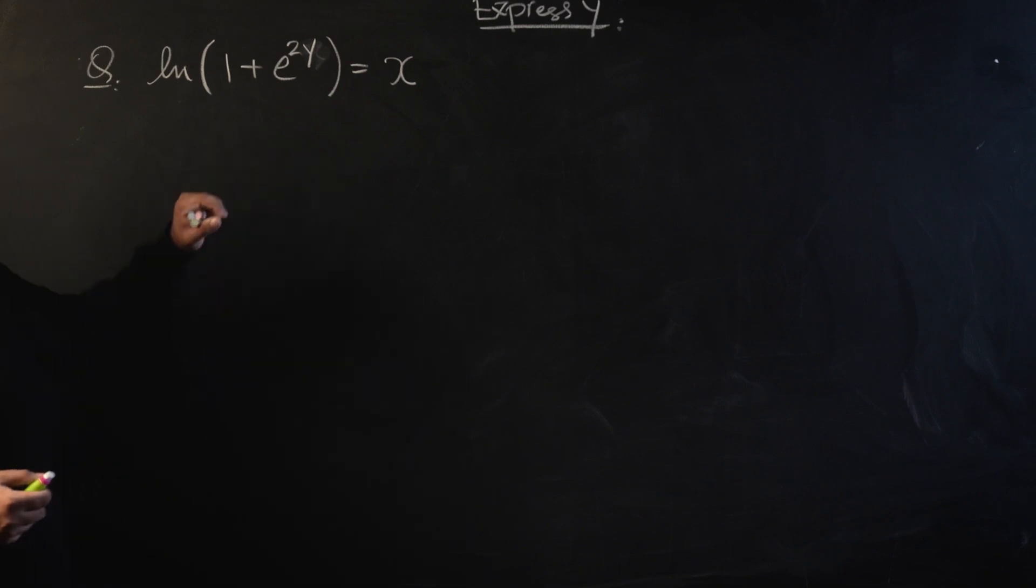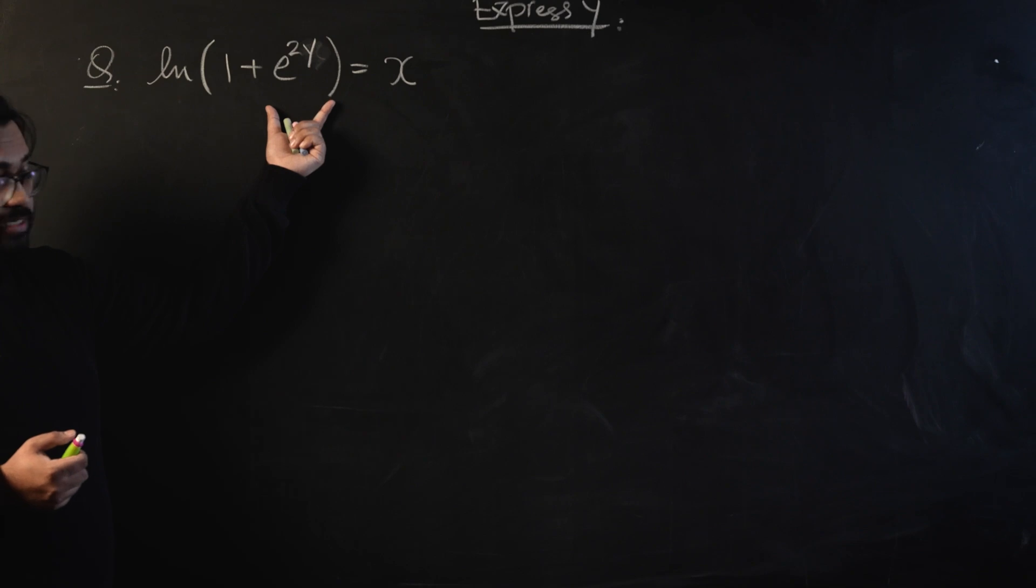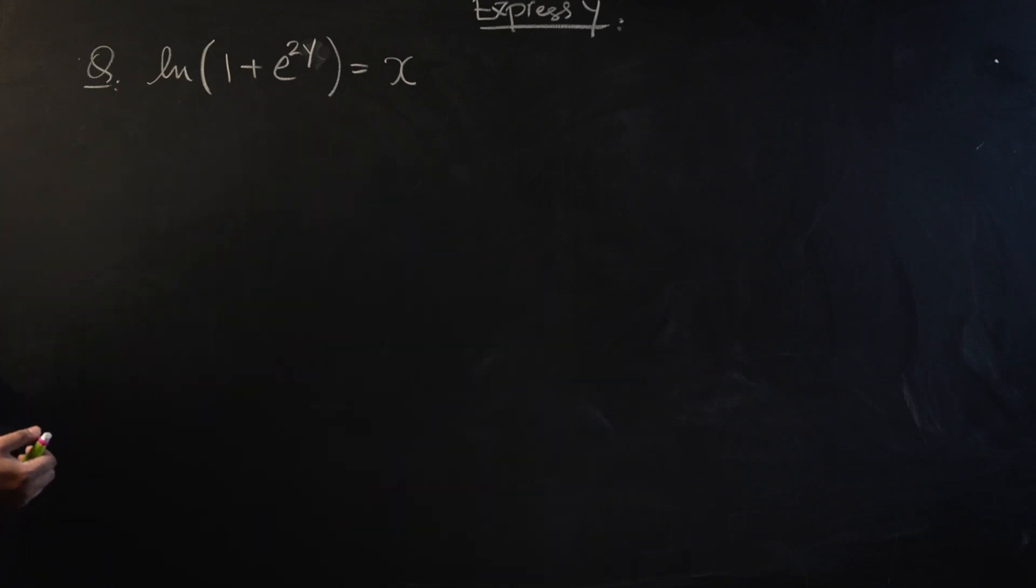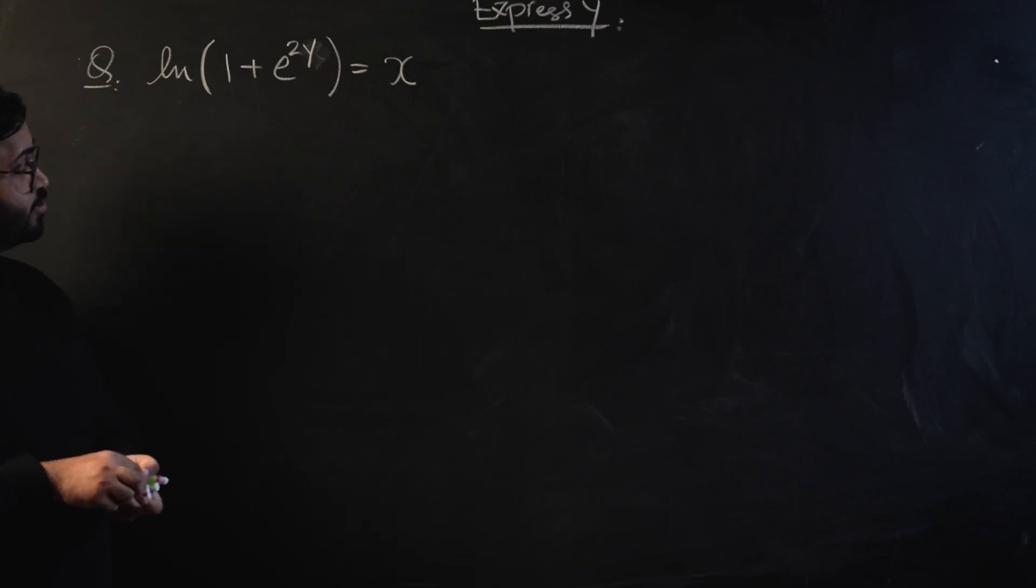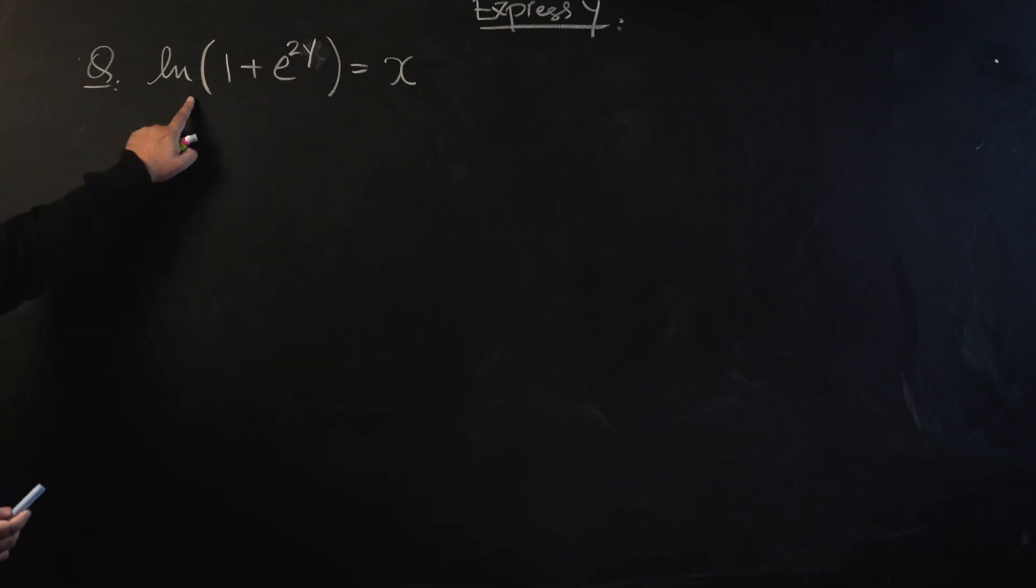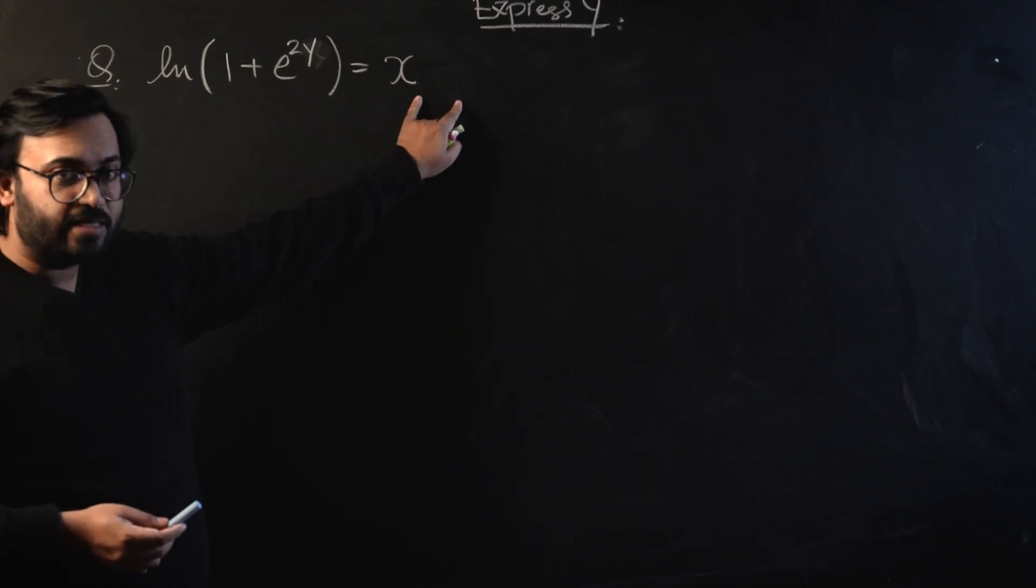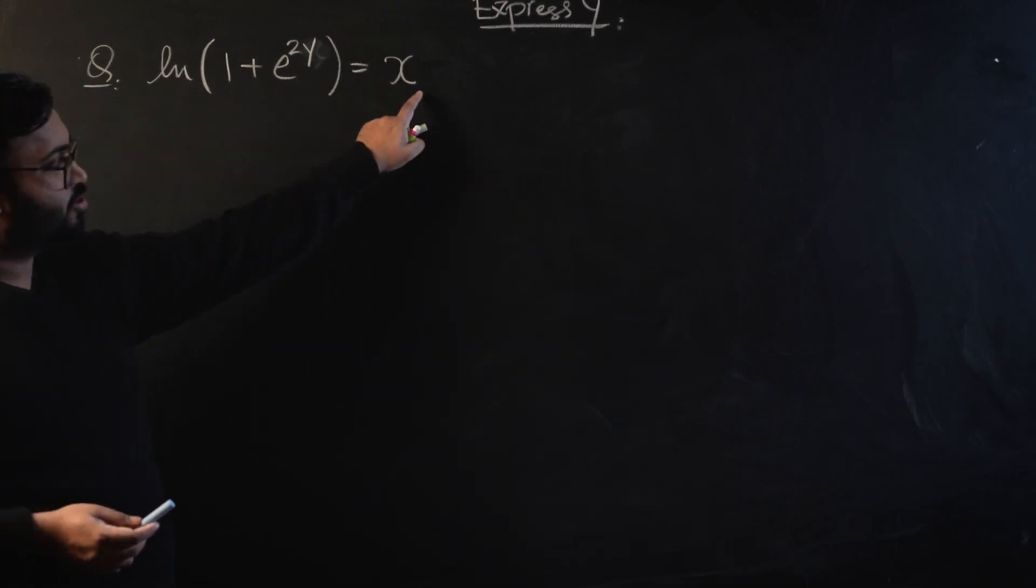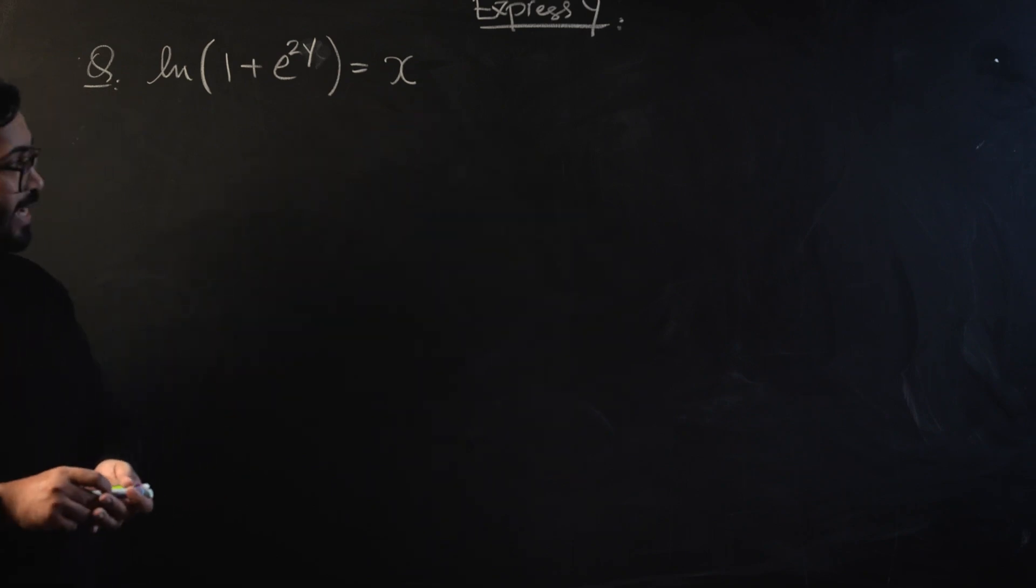All right, so for those of you who have already tried this question and are successful, congratulations. For those of you who are unable to solve this, let's have a look at the solution. The main idea starts from the fact that we have a singular term on both sides and we have logarithm on one side but there is no logarithm on the other side.